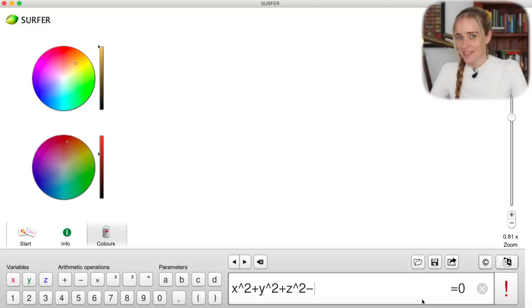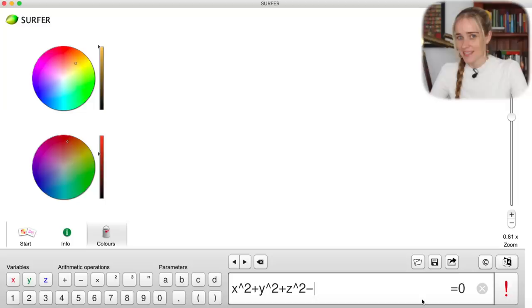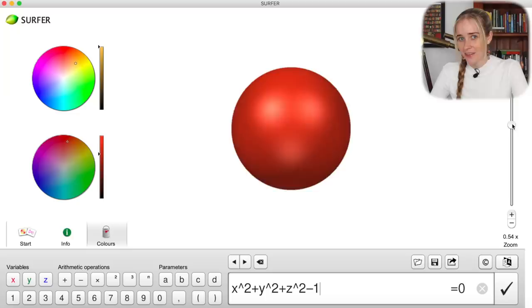Let's take a look at the equation x squared plus y squared plus z squared minus one is equal to zero. Having Pythagoras in mind, the solution here are just those points that are a distance of one from the origin. And indeed, we can see a perfect sphere on our screen.